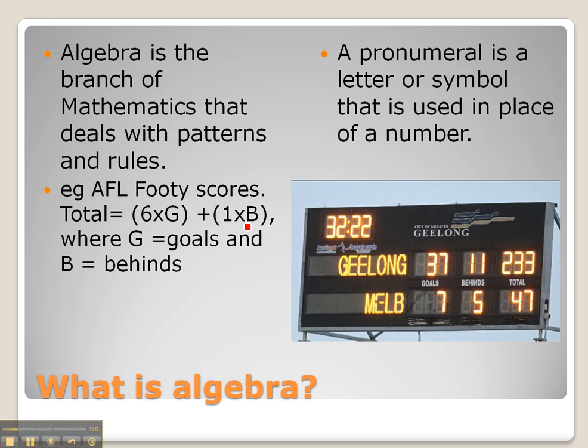The g and the b in this case are called pronumerals, and a pronumeral is a letter or symbol that is used in place of a number.